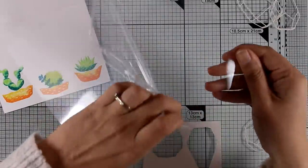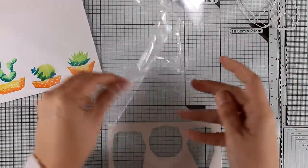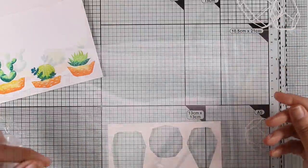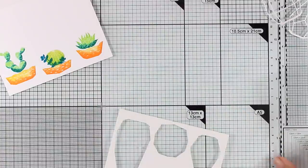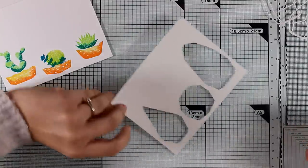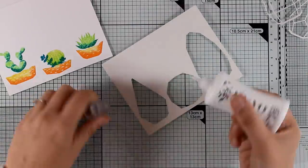If you use this acetate, make sure to peel off that plastic wrap that is there just to protect the acetate from scratches. I'm going to cut it to size and I'm going to glue it at the back of my window panel.